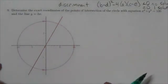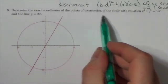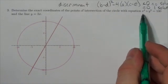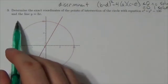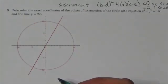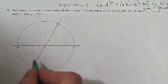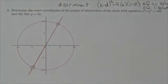Okay, question three. Determine the exact coordinates of the points of intersection of the circle with the equation x squared plus y squared equals 100 and the line y equals 2x. Now that's been drawn for you right here so you can see it. So what we're looking for here are the coordinates of those two points.